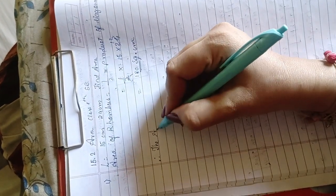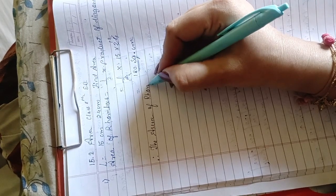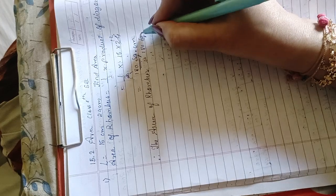which is very important. The area of rhombus is 180 square centimeter.